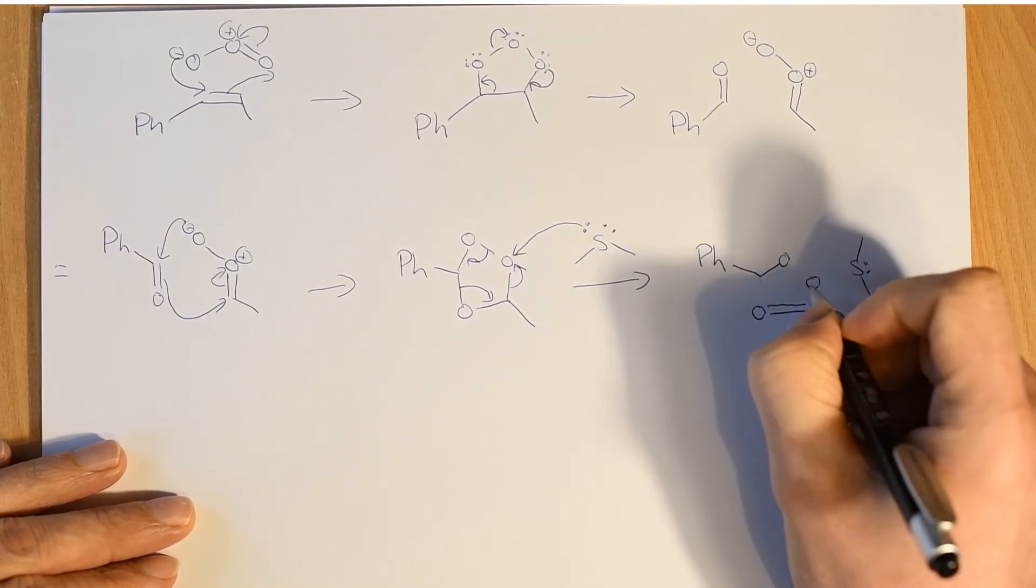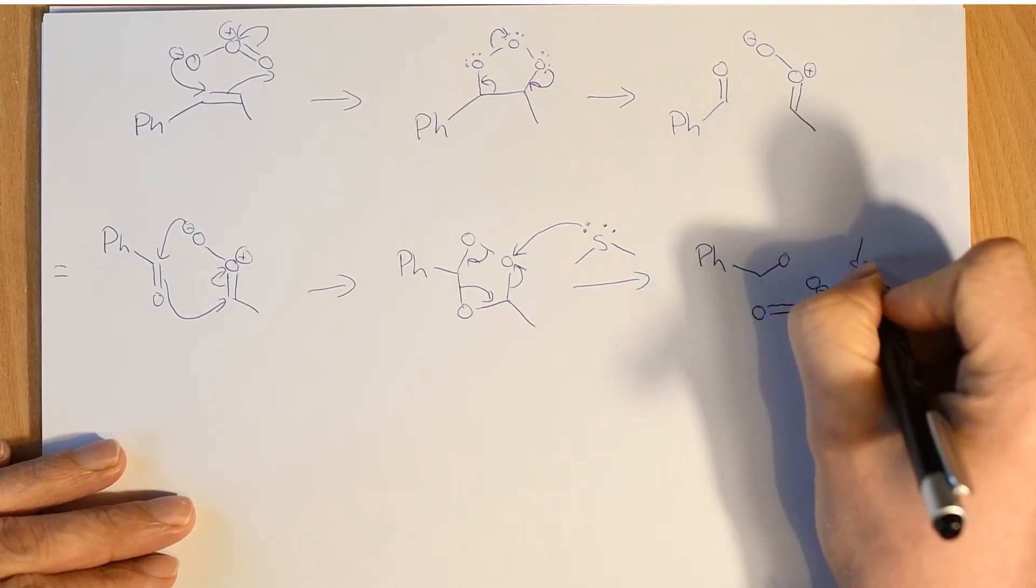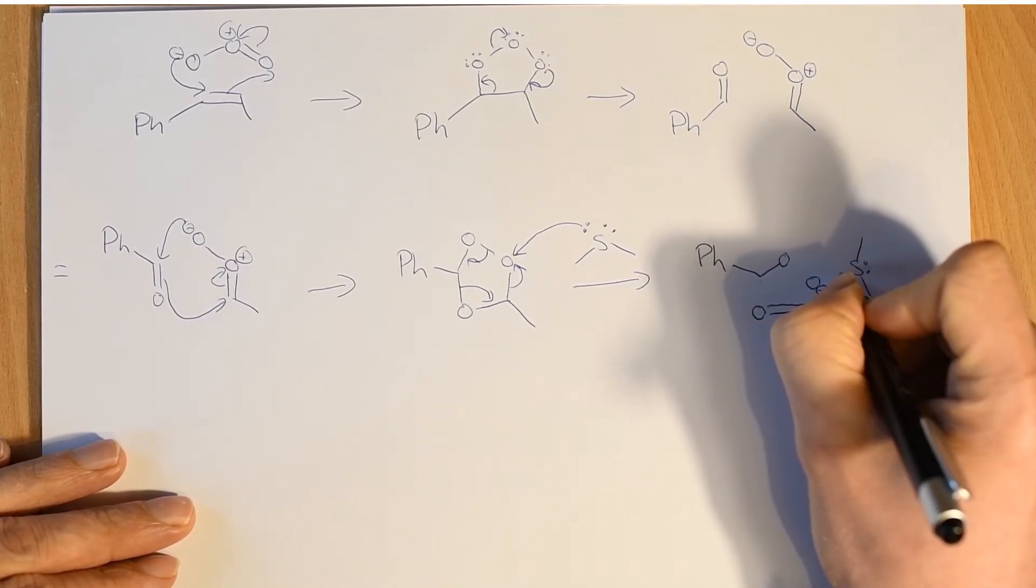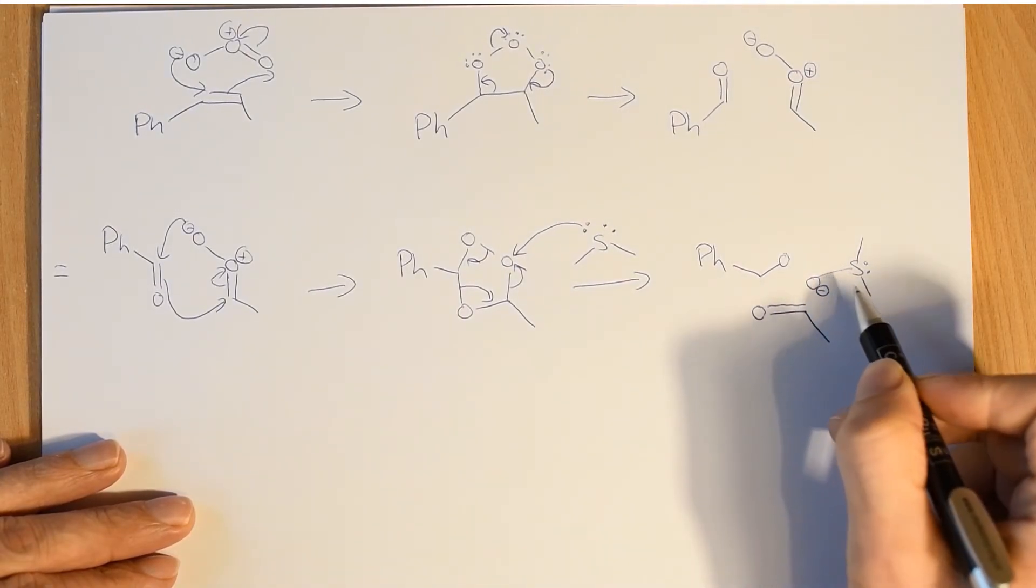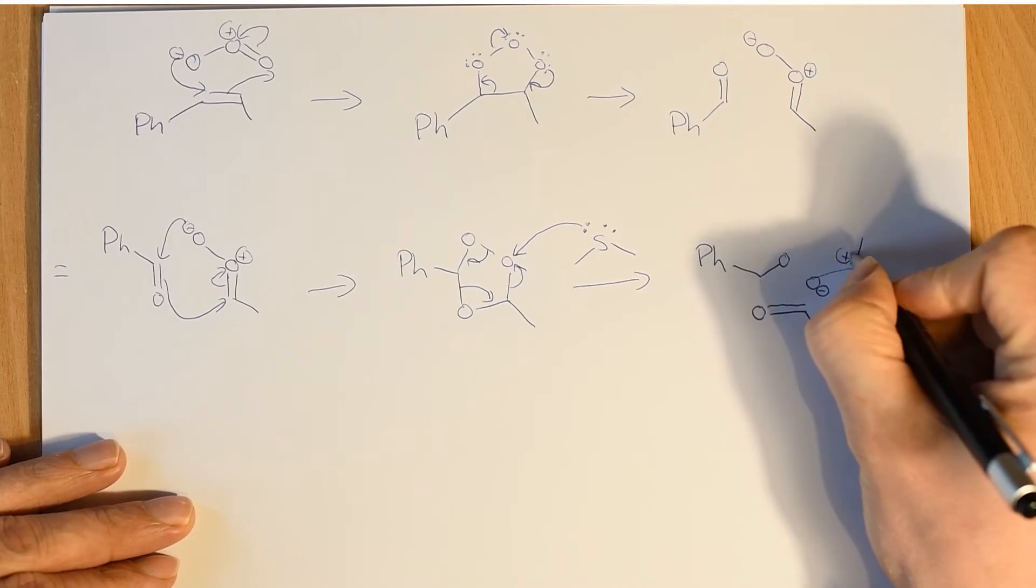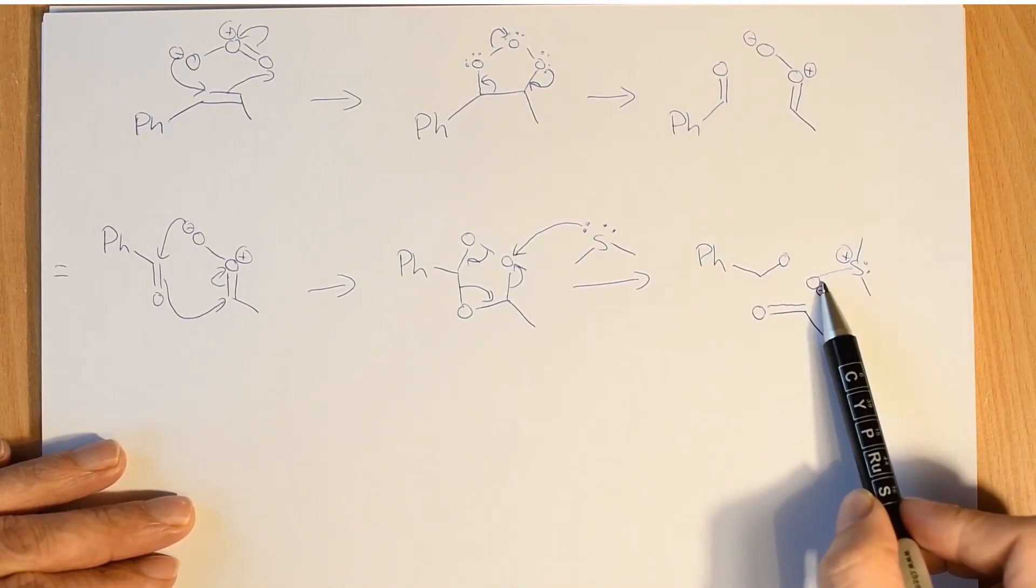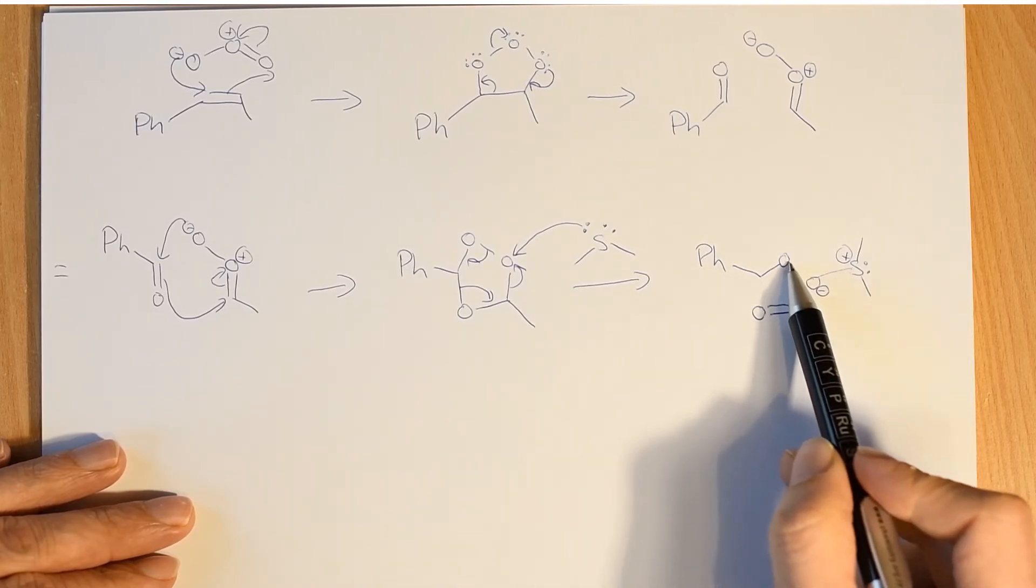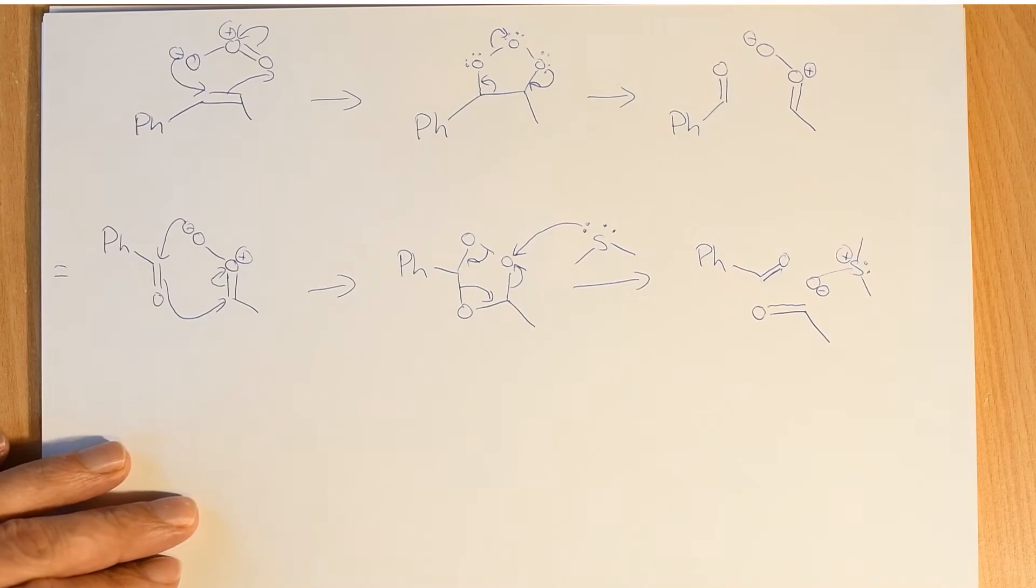We took this pair of electrons and we gave it all to the oxygen, which now has a negative charge. We took this pair of electrons, which was in the sulfur lone pair, and we've now created an oxygen-sulfur bond. So that sulfur is now positively charged, and you'll recognize that as being dimethyl sulfoxide. And we took this pair of electrons here, and we remade our second aldehyde.